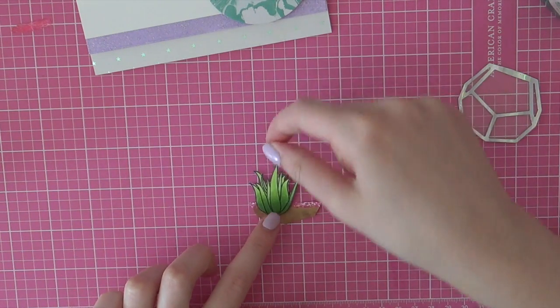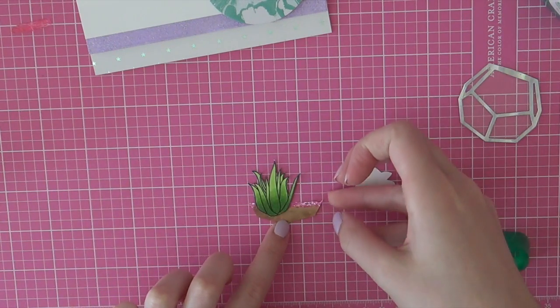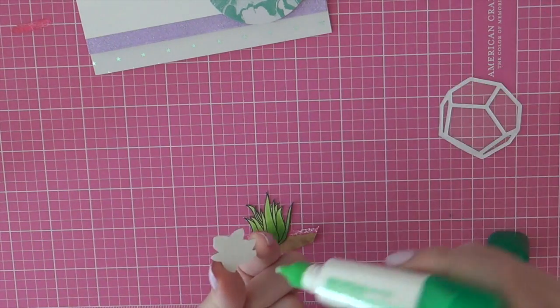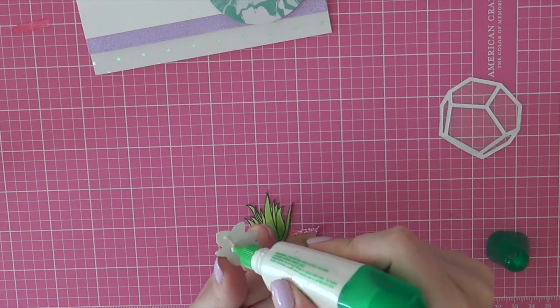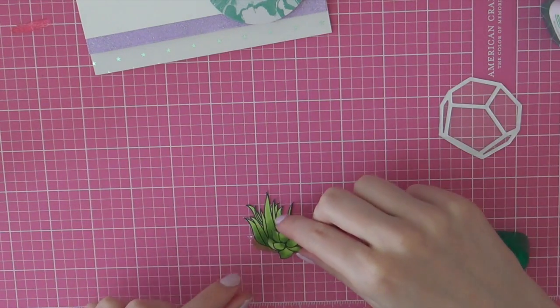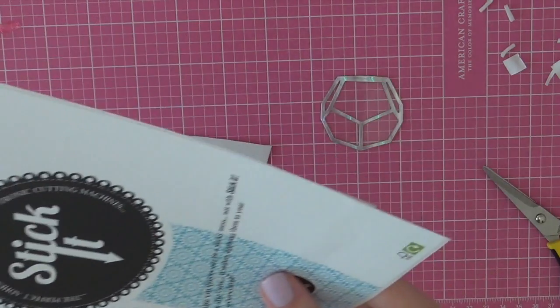But I just did some really simple Copic coloring using three colors. I used YG23, then I used YG17 and then for the darkest color I used YG67.